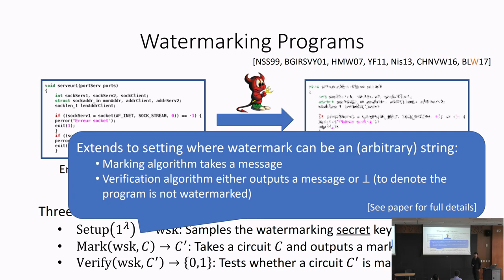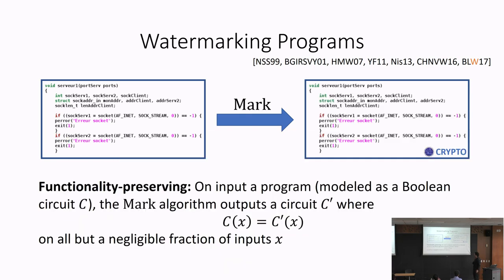Let me define the formal properties we require from such a watermark. The first is the functionality-preserving requirement: if I take a circuit C and watermark it, producing a new circuit C prime, then on almost all inputs, C(x) equals C prime(x). If we have a super-polynomial-sized domain, the number of points on which C and C prime can differ is polynomial-sized.